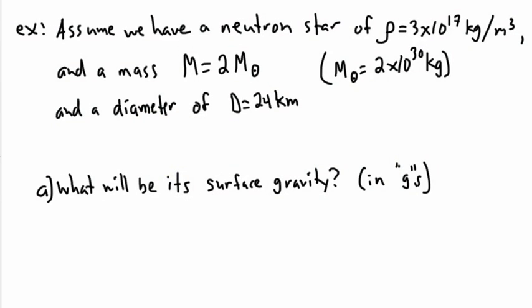Another fun thing we can do with neutron stars is to try to work with them and figure out some interesting facts. I think it's fun to try to look at a neutron star and deal with some real numbers. So assume we have a neutron star with a density of ρ = 3×10^17 kg/m³, and a mass M = 2M☉ where M☉ = 2×10^30 kg, and a diameter of D = 24 kilometers.